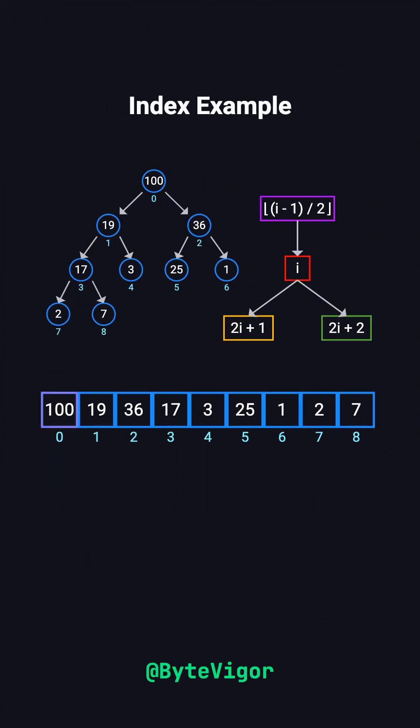Let's walk through this. The root, 100, is at index 0. Its left child is at 2 times 0 plus 1, equaling 1, and holds the value 19. Its right child is at 2 times 0 plus 2, equaling 2, and holds the value 36.